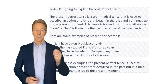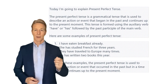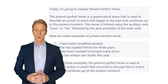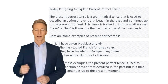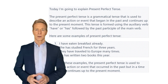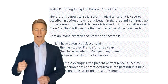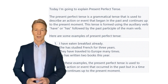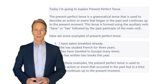The present perfect tense is a grammatical tense that is used to describe an action or event that began in the past and continues up to the present moment. This tense is formed using the auxiliary verb have or has followed by the past participle of the main verb.